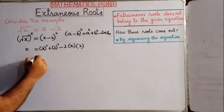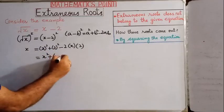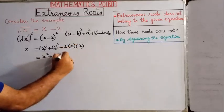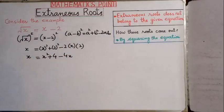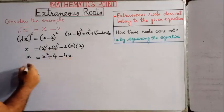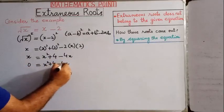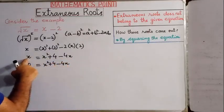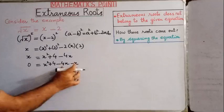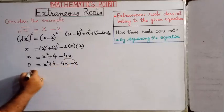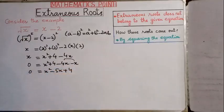Opening the squares on the right hand side: x square plus 4 minus 4x. On the left hand side we have x. Now taking x to the right hand side, we have 0 is equal to x square plus 4 minus 4x minus x. Combining the x terms, we have minus 5x, so 0 is equal to x square minus 5x plus 4.